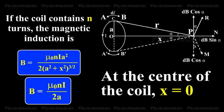At the center of the coil, the magnetic induction is B is equal to mu naught N IA square by 2 into A square plus X square the whole raised to 3 by 2. At the center of the coil X is equal to 0. B is equal to mu naught into N into I by 2A.